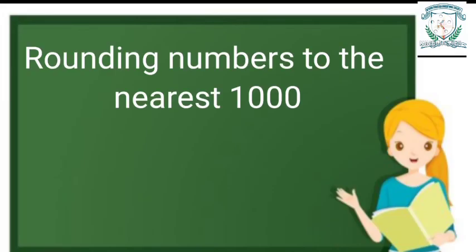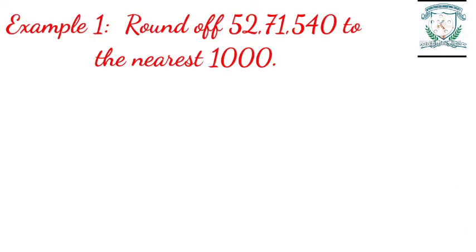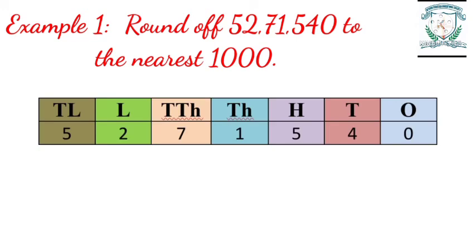Let us understand the process of rounding numbers to the nearest thousand. Example one: round off 52,71,540 to the nearest thousand. Step one: arrange the number in a place value chart. Step two: identify the place to be rounded — in 52,71,540, the thousands place should be rounded off to the nearest thousand.